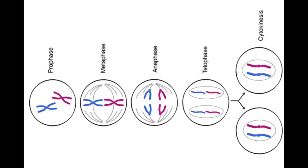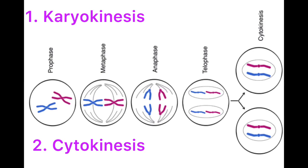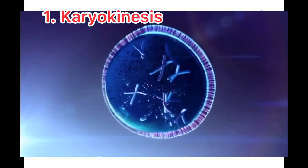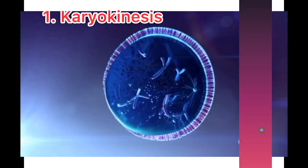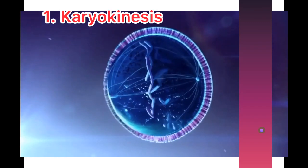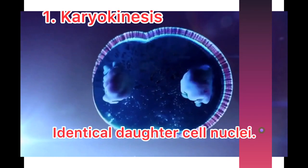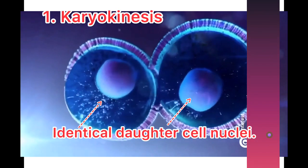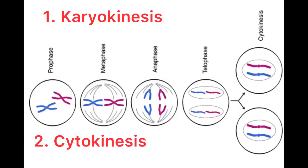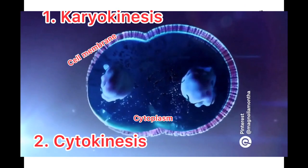Mitosis cell division contains two major stages of division: number one, karyokinesis; number two, cytokinesis. The process of division of nucleus and genetic material during cell division is called karyokinesis. In this process, a single mother cell nucleus gets divided into two identical daughter cell nuclei. After the completion of karyokinesis, cytokinesis occurs where cytoplasm and the cell membrane divide into two complete daughter cells.